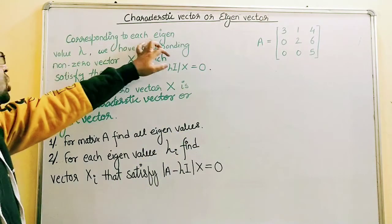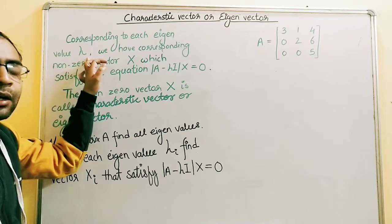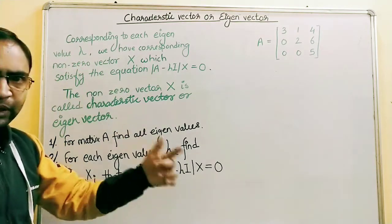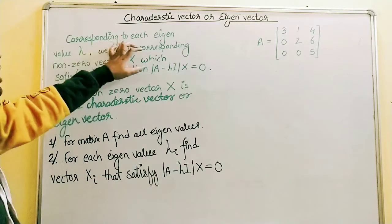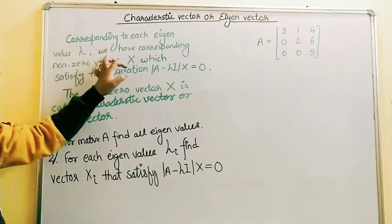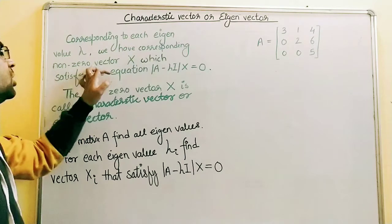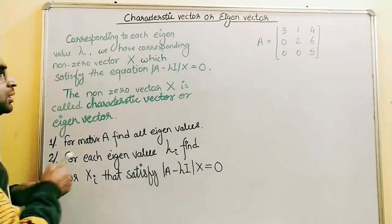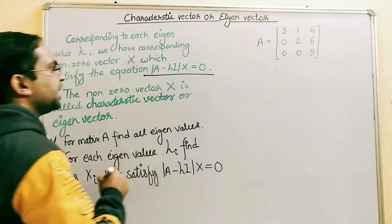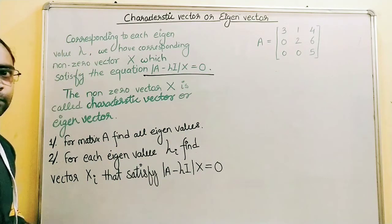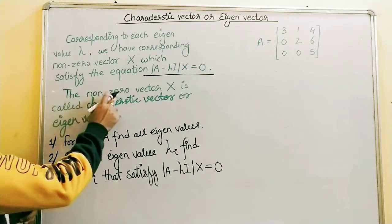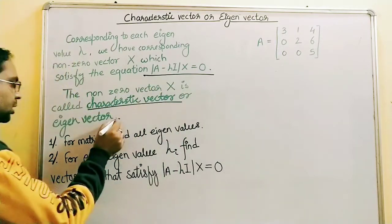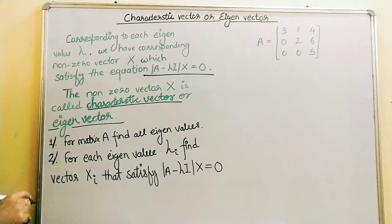Corresponding to each eigenvalue lambda, we have a corresponding non-zero vector x which satisfies the equation A minus lambda I times x equals 0. This non-zero vector x is called the characteristic vector or eigenvector.